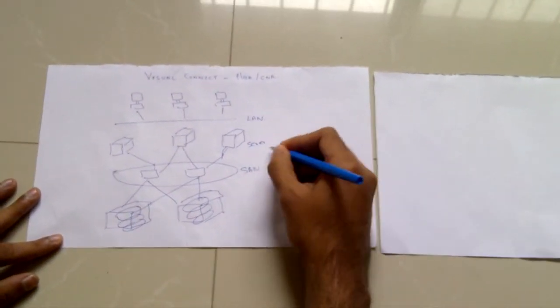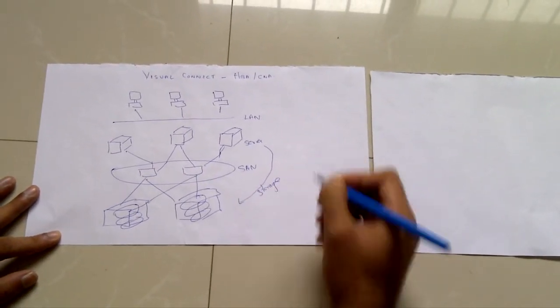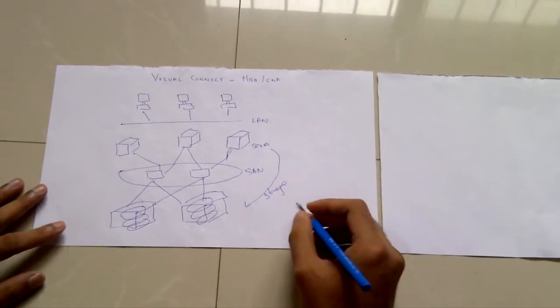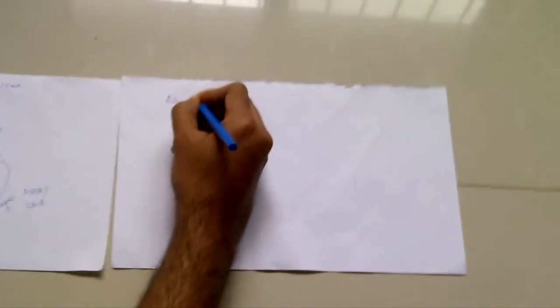This could either be a host bus adapter or a converged network adapter. The advantages of an HBA and CNA are IO processing.